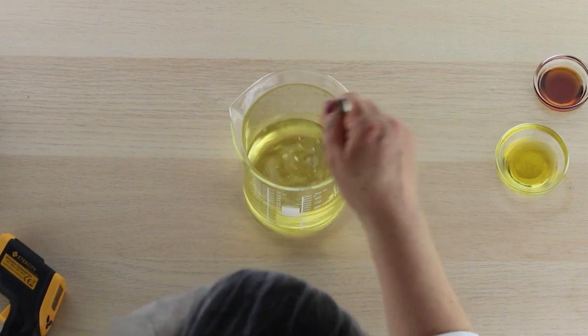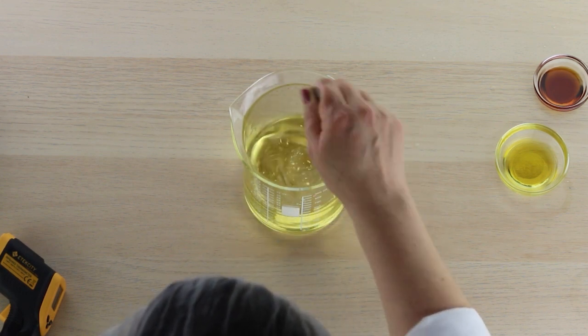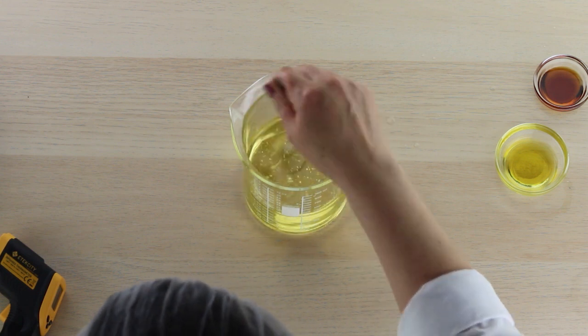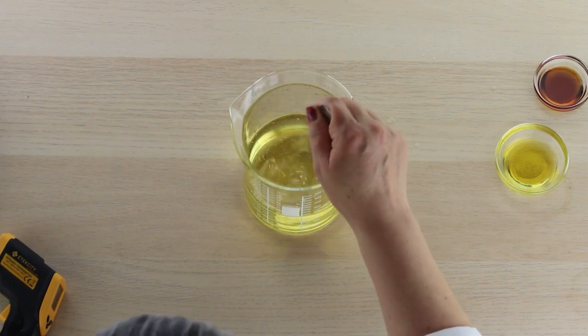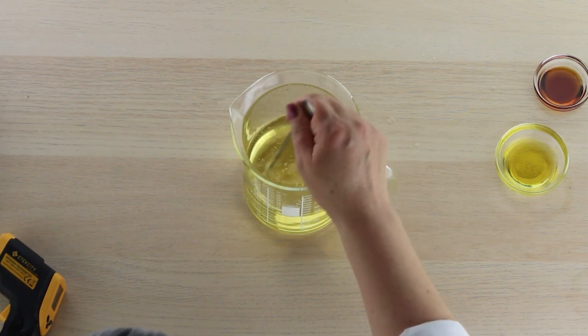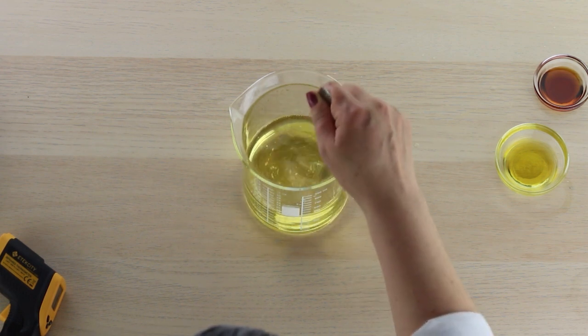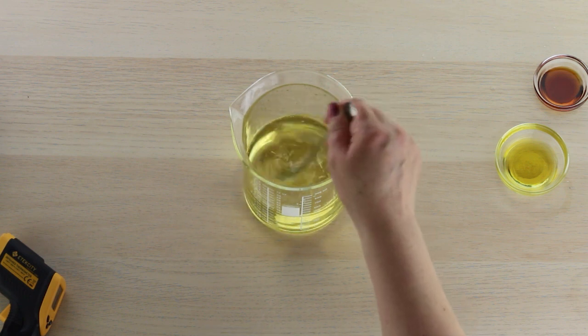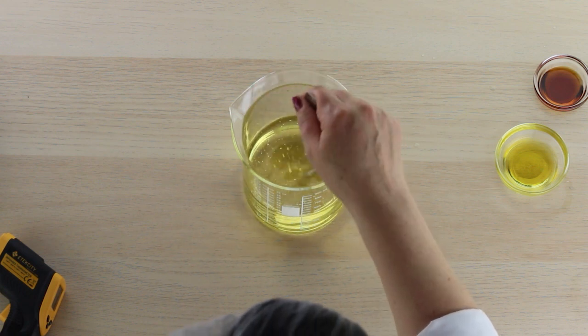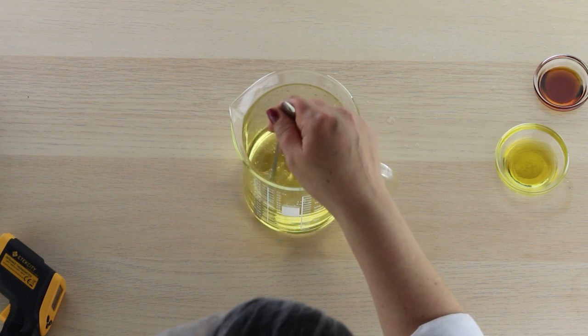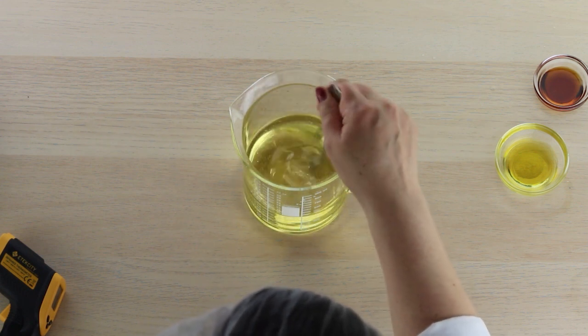So while this is mixing and we're waiting for it to dissolve, I'll talk about a few of the ingredients. Castor oil is a great cleansing oil ingredient, especially for problem skin, and so is sunflower oil. The plum oil is just a wonderful emollient on its own. However, I really wanted to bring the aroma of the plum oil. It has a beautiful cherry almond aroma. And because this is for troubled skin, I did not want to add any essential oils to this particular oil cleanser.